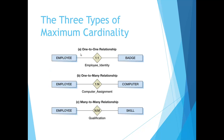This figure shows the three types of maximum cardinality. In the first diagram, we have the employee and badge as entities — each employee will have one badge only, and each badge will be related to one employee, so this is a one-to-one relationship. The relationship between employee and computer is one-to-many — one employee might have many computers: desktop, laptop, or other devices.